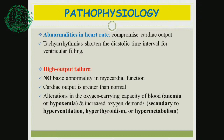In high output failure, there is no abnormality in myocardial function. Cardiac output in the initial period is greater than normal, but there is impairment in the oxygen-carrying capacity of the blood, secondary to anemia of any cause or hypoxemia. There may be increased oxygen demand secondary to hyperventilation, hyperthyroidism, or increased metabolic conditions. In response to all these, cardiac output increases to its maximum capacity and eventually the heart fails. These conditions are called high output failure.